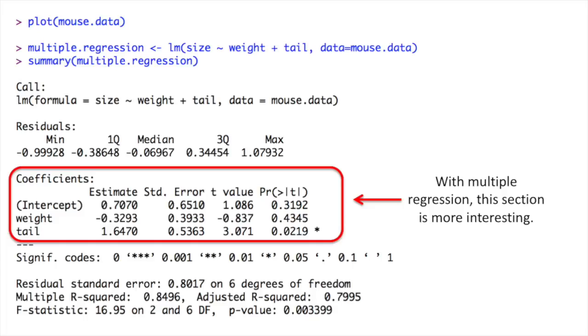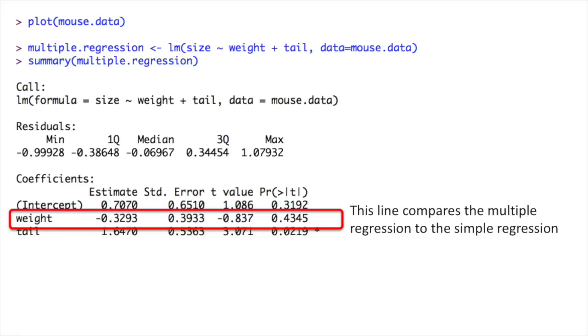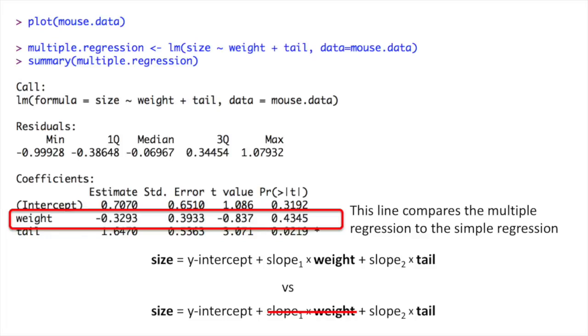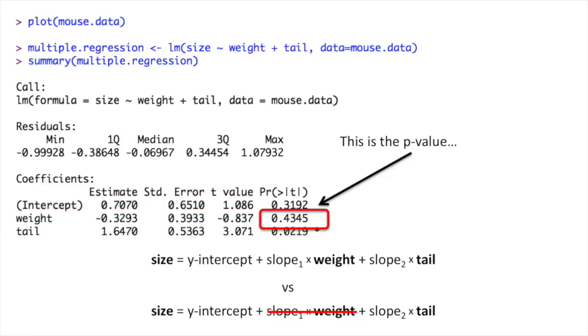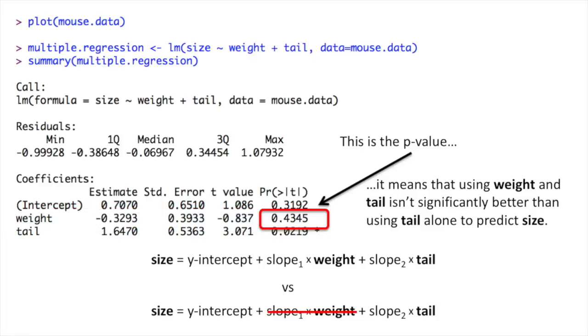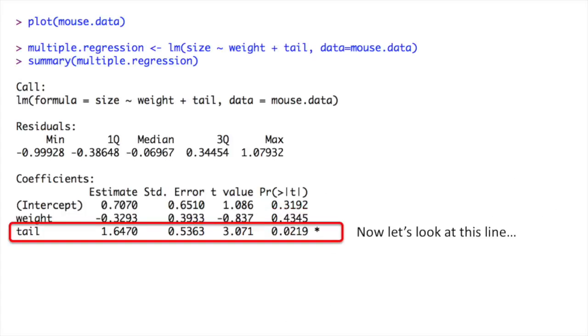With multiple regression, this section is more interesting. This line compares the multiple regression to the simple regression. It compares this model, which uses both weight and tail to predict size, to this simpler model, where we're just using tail to predict size. This is the P value. It means that using weight and tail isn't significantly better than using tail alone to predict size.